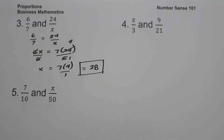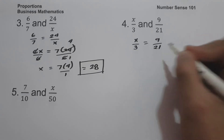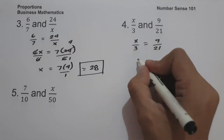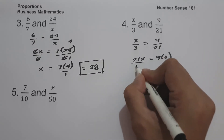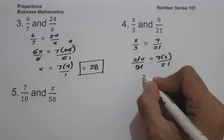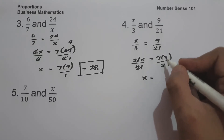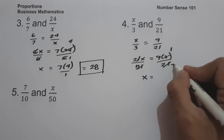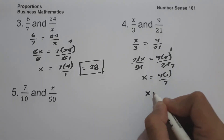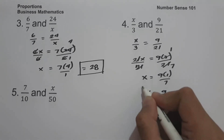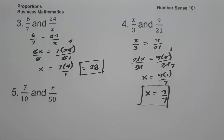On number four, we have x over 3 and 9 over 21. Setting up x over 3 equals 9 over 21, cross multiplying gives 21x equals 9 times 3. Dividing both sides by 21, since 3 and 21 are divisible by 3, 3 becomes 1 and 21 becomes 7. So x equals 9 times 1 over 7, which is 9 over 7. This is the value of x.